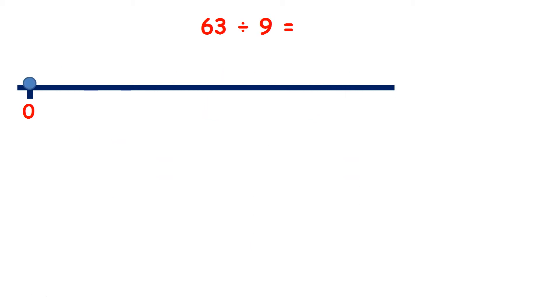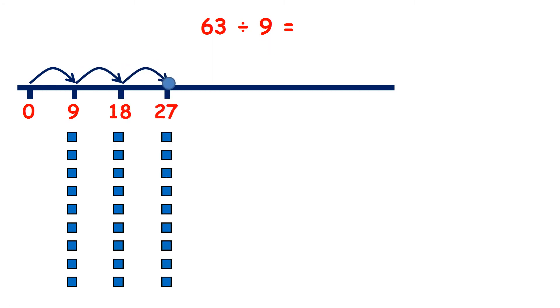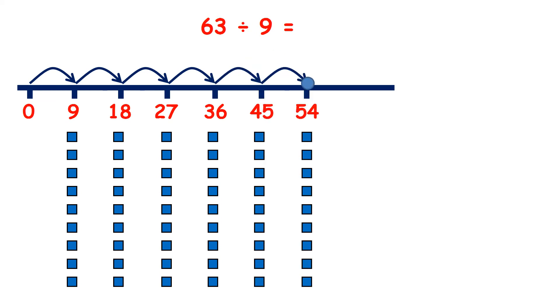Now 63 divided by 9, so if we count in 9s, we have 9, 18, 27, 36, 45, 54, 63. So we have a total of 7 jumps, or 7 groups of 9. And that's interesting because the last question we did, we found 63 divided by 7 equals 9. So with division you can switch these two numbers around, you can switch the divisor and the quotient around to get a different division fact.